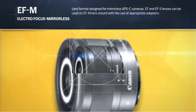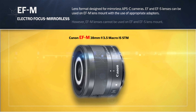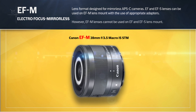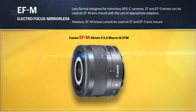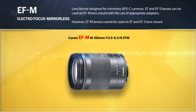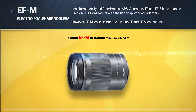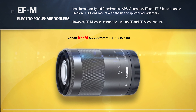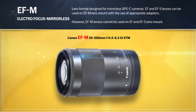EF-M is a lens format designed for mirrorless APS-C cameras. EF and EF-S lenses can be used on the EF-M lens mount with the use of appropriate adapters. However, EF-M lenses cannot be used on EF and EF-S lens mounts.